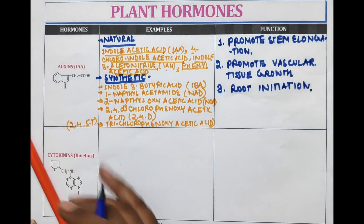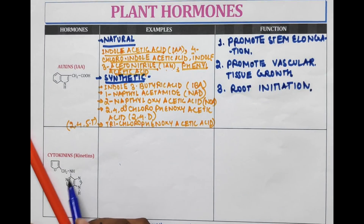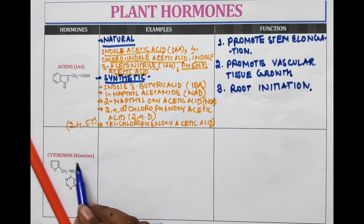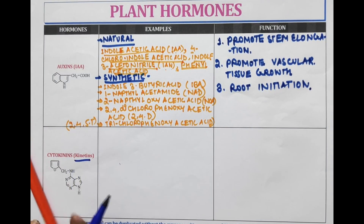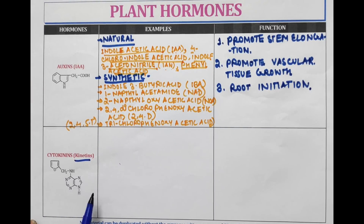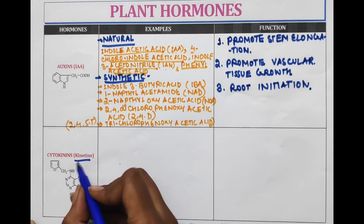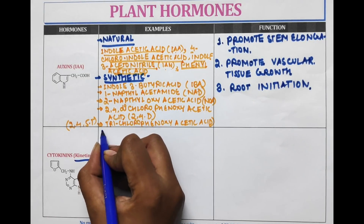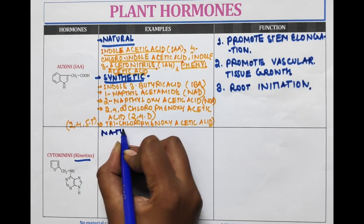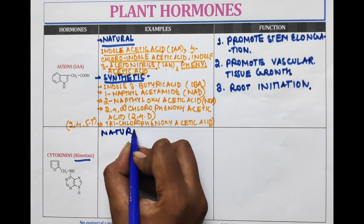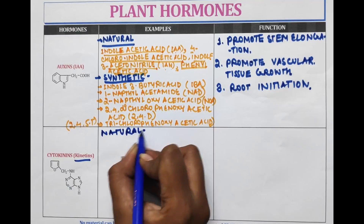The second hormone is cytokinin, also known as kinetin. This is the structure of cytokinin. Cytokinin is also of two types: natural and synthetic.